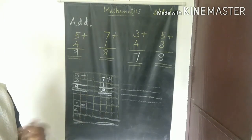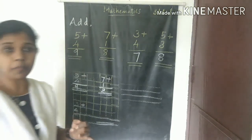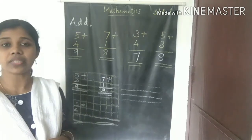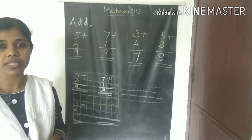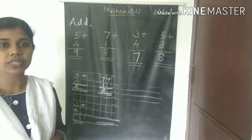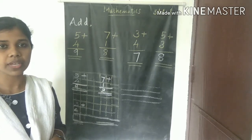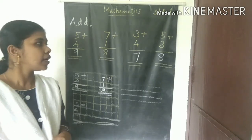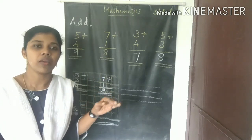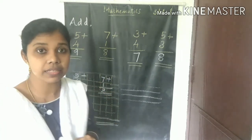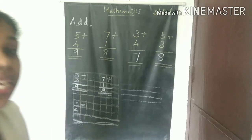So if you have understood simple addition, vertical addition, horizontal addition, and the properties of addition — that is, the order property in addition — for numbers zero to ten, you have understood the topic. I'll wind up the class. Thank you — we will meet again in the next class.